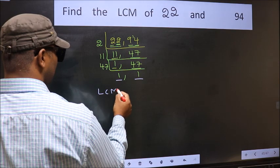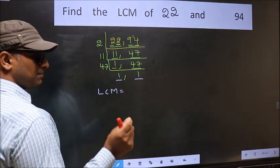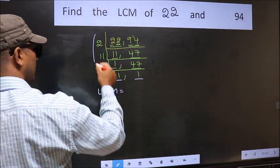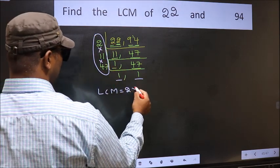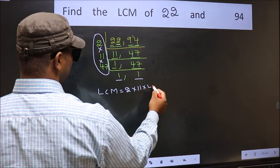So our LCM is the product of these numbers. That is 2 times 11 times 47.